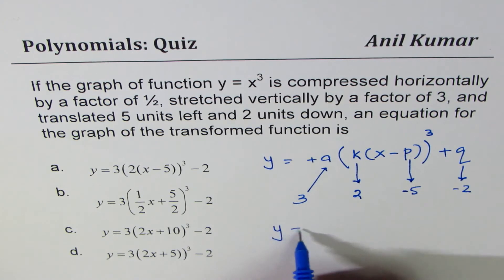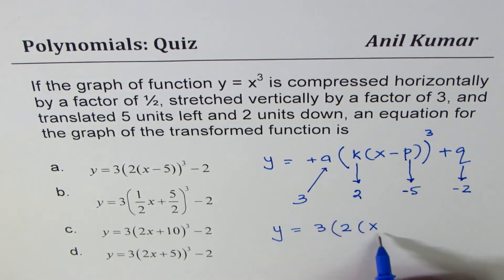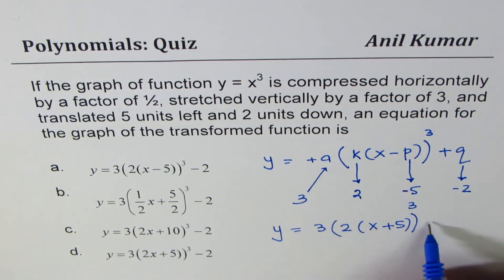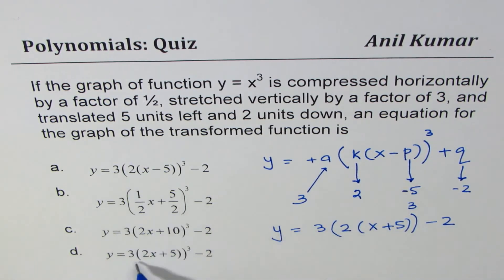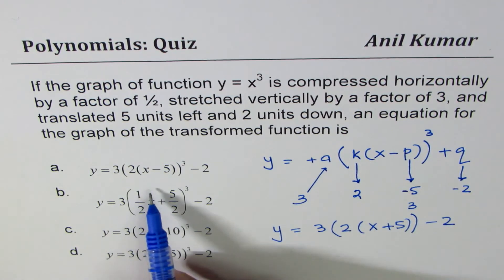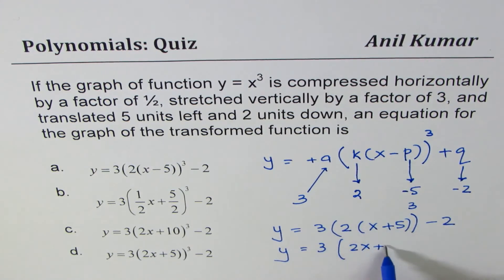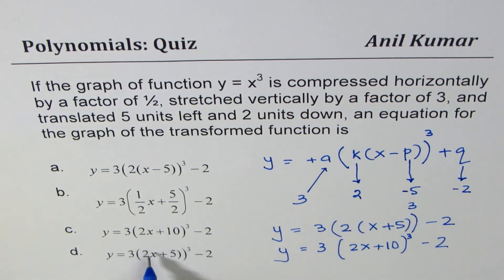So the equation is y = 3(2x + 5)³ - 2. Let's try to match this with the options. Since three and minus two appear in all options, we look at the inside function: two times x plus five. They have actually expanded the bracket, so opening it: 2x + 10 inside, giving y = 3(2x + 10)³ - 2. That matches with option C.